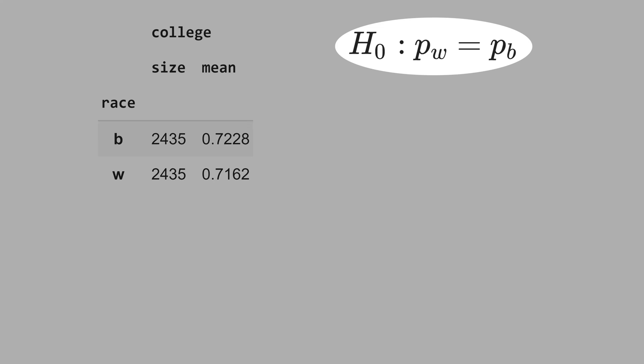Let's write the null hypothesis that the proportion of white people with college degree is the same as the proportion of black people with college degree. We need to get the z-statistics, and we outsource the computation to the computer.